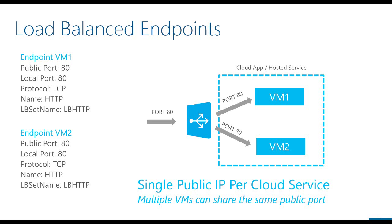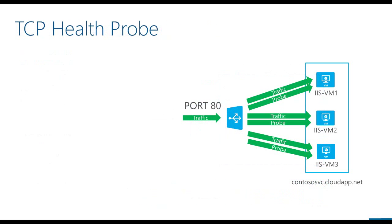Load-balanced endpoints follow the same concept as port forwarding. The difference is that multiple virtual machines can receive traffic from the same public port. VM1 and VM2 both have an input endpoint configured to forward traffic from port 80 to private port 80, and they are part of a load-balanced set, which tells Windows Azure to distribute traffic in a round-robin fashion to the virtual machines.